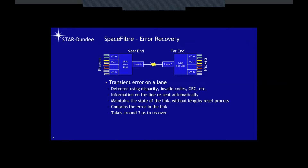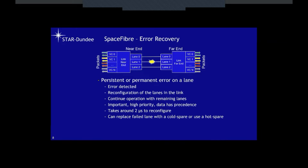Error recovery maintains the state of the link without a lengthy reset process and contains the error in the link. It takes just around three microseconds to recover from a transient error on a Space Fiber link, including resending the information. If we've got a multi-lane link and a persistent or permanent error occurs on a lane, the errors detected and we can reconfigure the lanes to remove the failed one. Because of quality of service, high priority data — like critical control information — will still get through the link even though we've lost one of the lanes. It takes just two microseconds to reconfigure once the error has been detected.